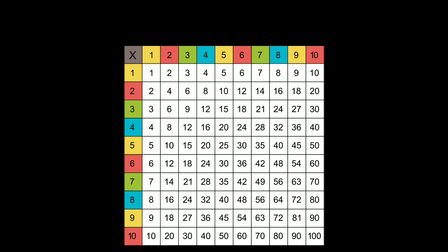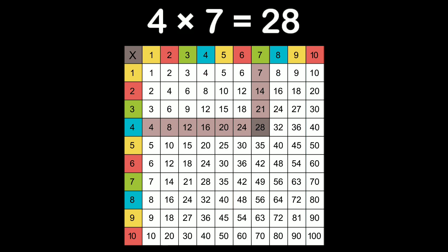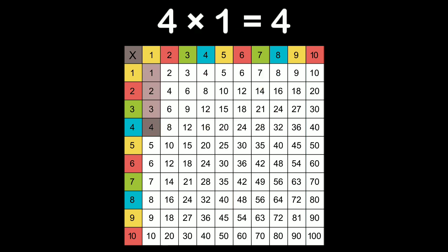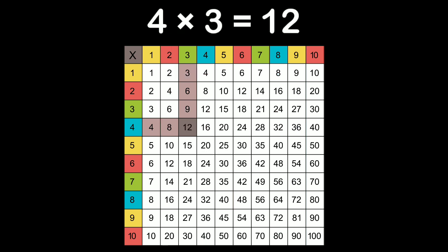Like I said before, when you multiply by four, you just quadruple that number and the answer is formed. For example, four times one will equal four, and four times two is the number eight. Four times three equals twelve, and then four times four equals sixteen. Isn't that just great?